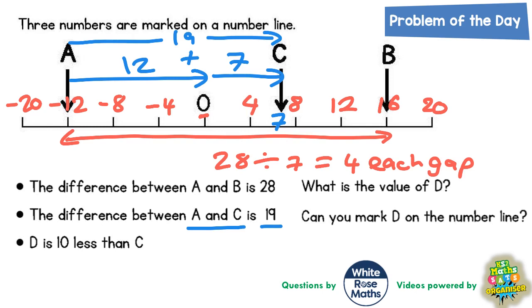So looking at the main points so far, we've found that A is level with negative 12. So A is on negative 12. We've found that C is on seven.